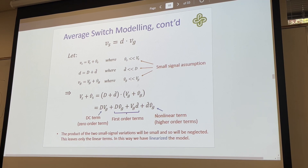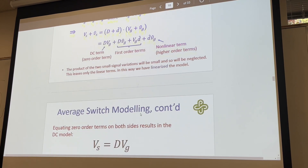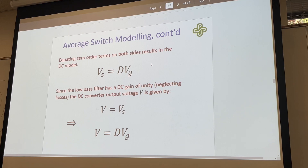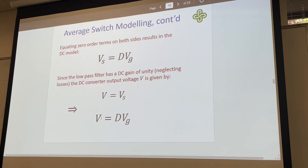By neglecting what we know to be very small deviations, we can linearize this equation, giving us a zero-order term on both sides — giving us our DC model. Since the low-pass filter has a DC gain of unity, neglecting losses, the DC converter output voltage is given by V equals VS, where VS would be the steady state duty cycle and the voltage input.